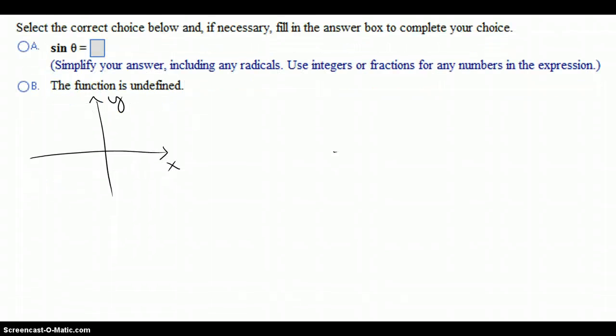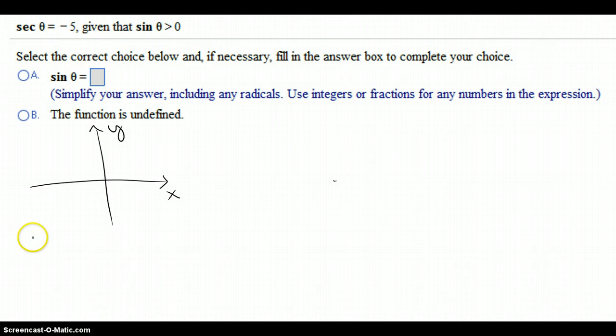So first of all, we know that secant of theta equals negative 5. I'm not going to worry about the negative yet. I'm going to say, where is secant less than 0, because negative 5 is a negative value. Less than 0 means negative.